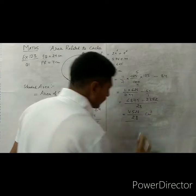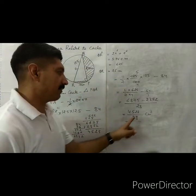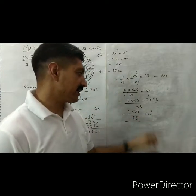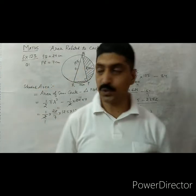So the shaded area is 4523 upon 28 centimeter square.